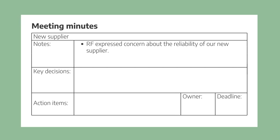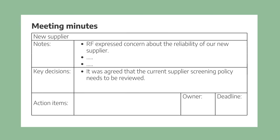Now we'll go back to our template for a moment and try it out. In the notes section: 'RF expressed concern about the reliability of our new supplier' — there would probably be additional notes on this agenda item; this is just one example. For key decisions: 'It was agreed that the current supplier screening policy needs to be reviewed.' And for the action item: 'Review current supplier screening policy — SE, September 22nd.'